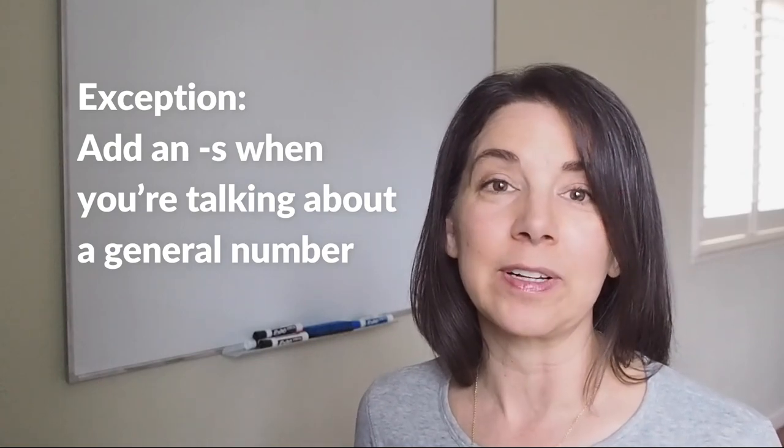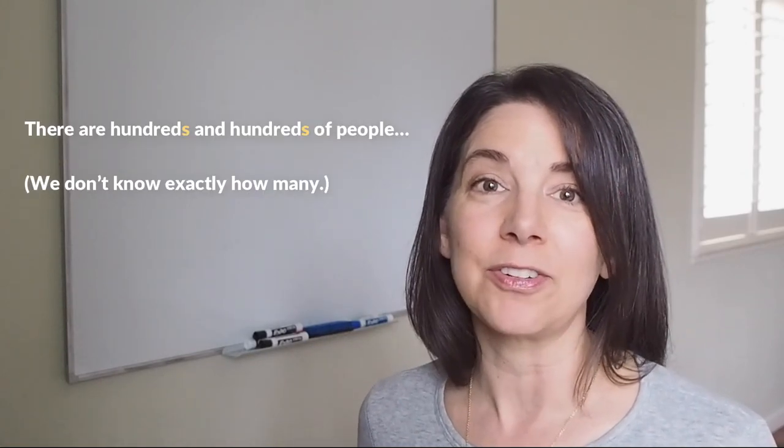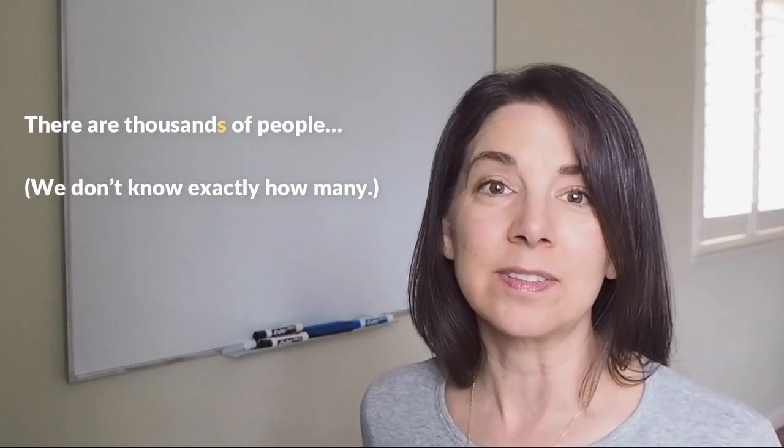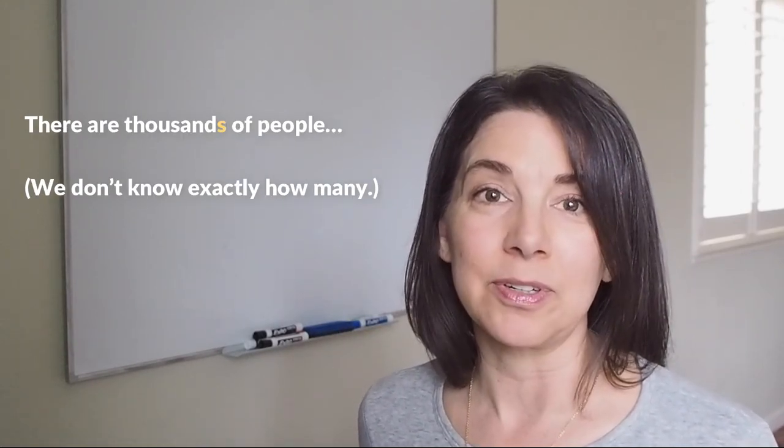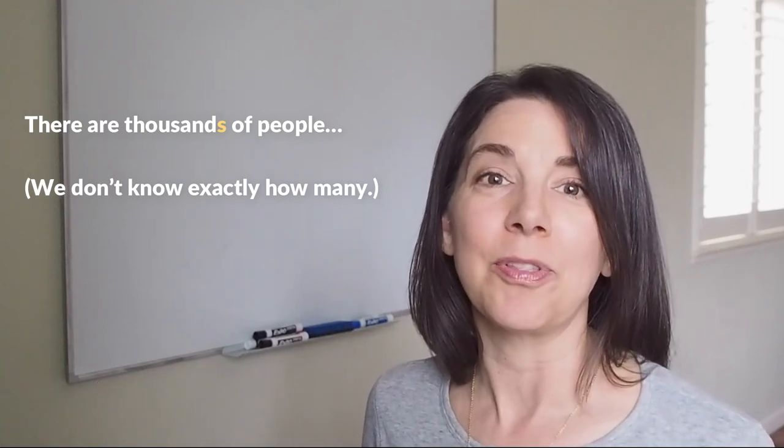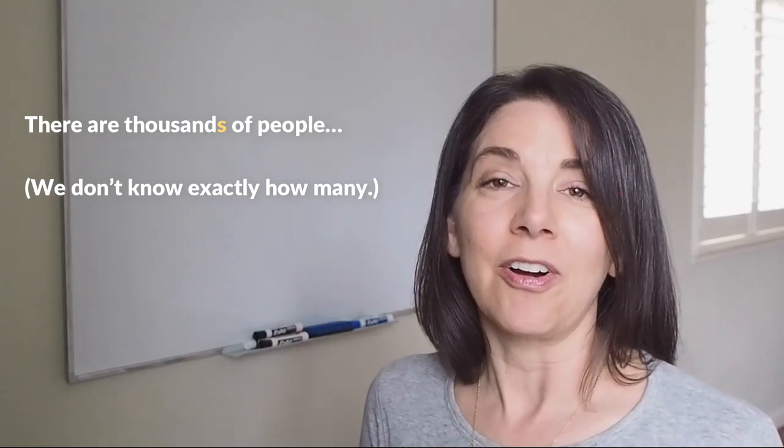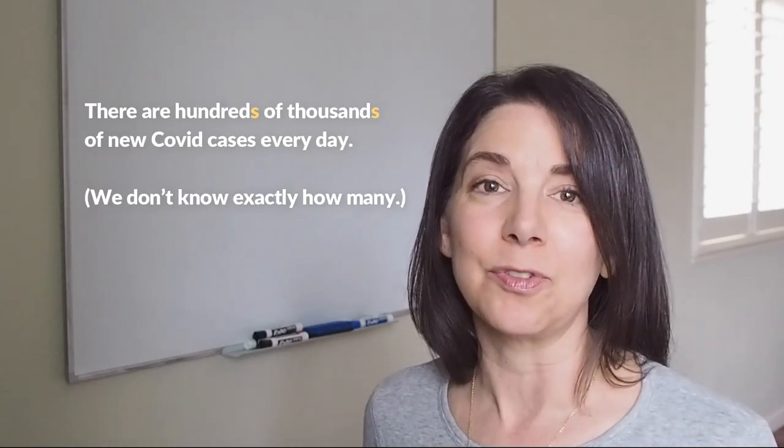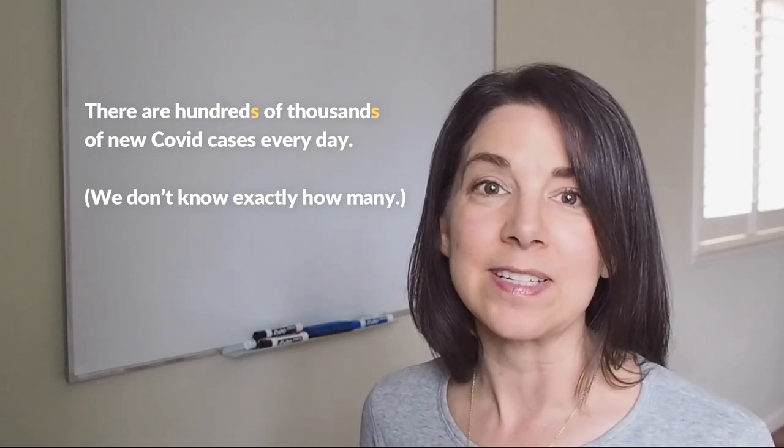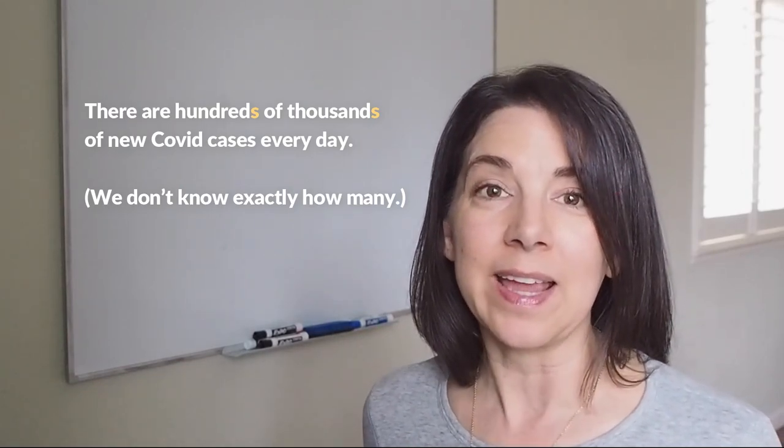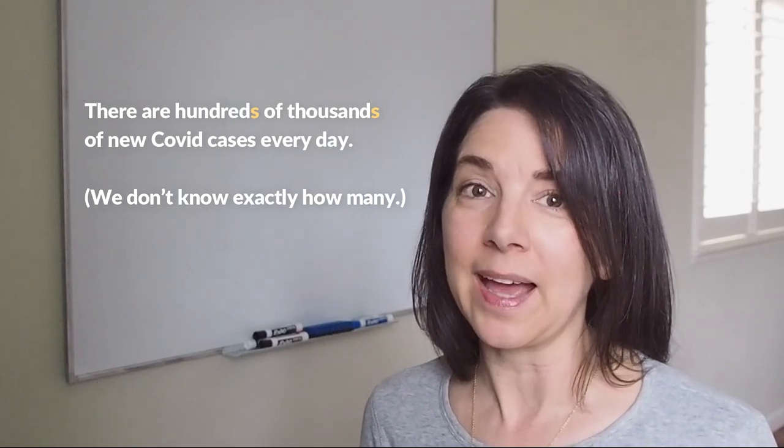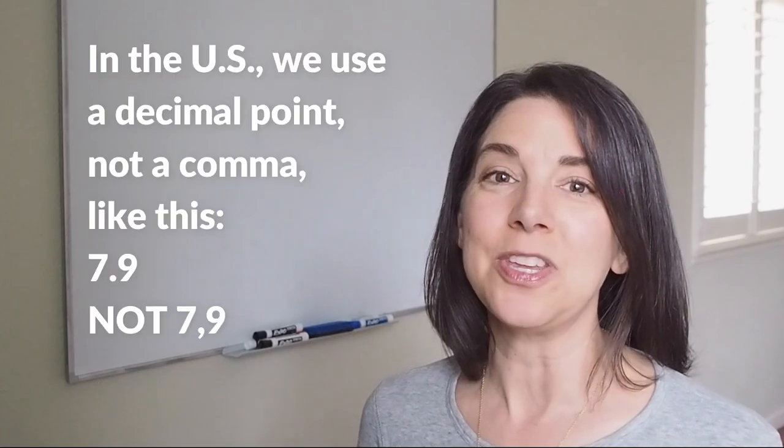The only exception to this is when we're talking about a general number. Like if we don't know exactly how many, then we can say, for example, there are hundreds and hundreds of people here, or there are thousands of people who live in this neighborhood. We don't know how many thousand, but we know that there are many thousands. We can also say, for example, there are hundreds of thousands of new COVID cases every day. So again, that means that we don't know exactly how many. So in that case we can add an 's', but for five million or any specific number, we don't add 's' at the end.